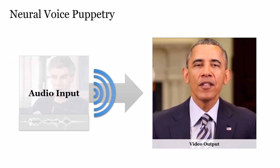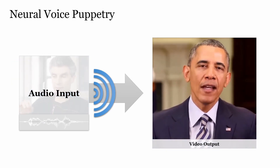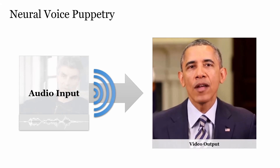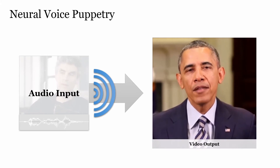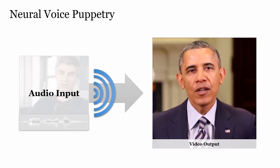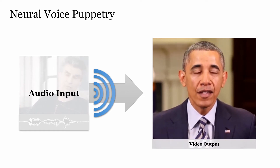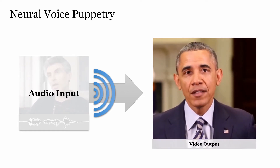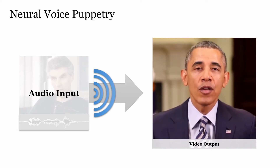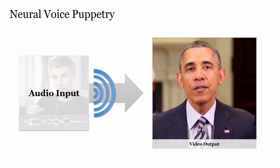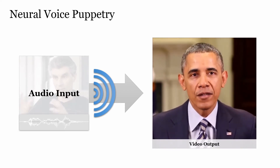Science makes progress by steps. Most of those steps are small. Some are slightly bigger. Seen from the outside, sometimes people have the impression that, oh, there's this big breakthrough. And journalists like to talk about breakthrough. But actually science is very, very progressive because we gradually understand better the world.